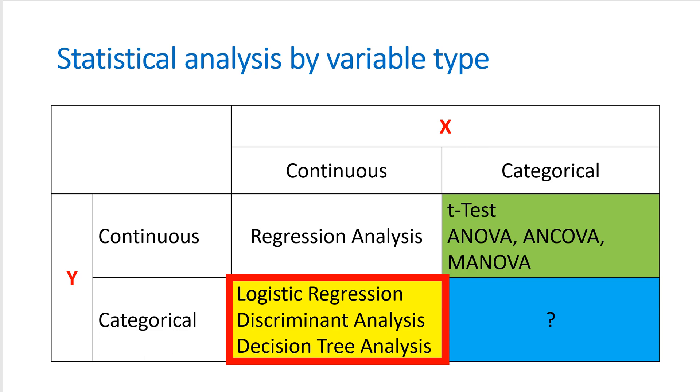If the y variable is categorical and the x variable is continuous, we can consider using various statistical analysis to predict categorical values of y, such as success or failure. Some commonly used methods for this purpose are logistic regression, discriminant analysis, decision tree analysis, and support vector machine.